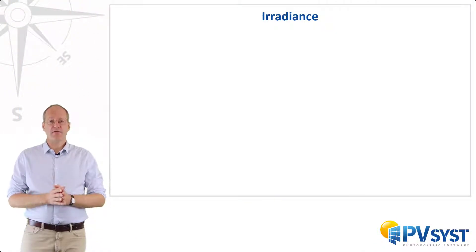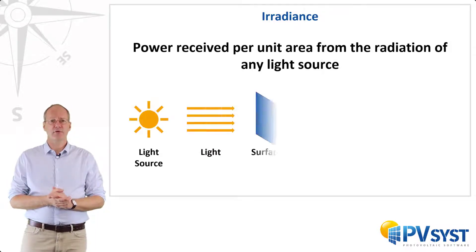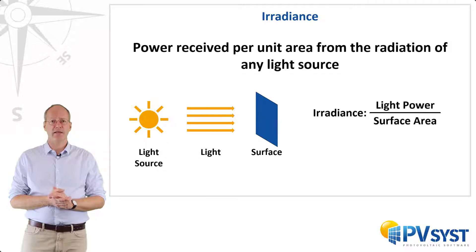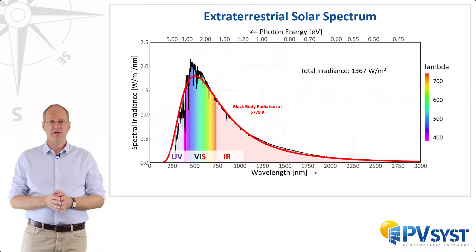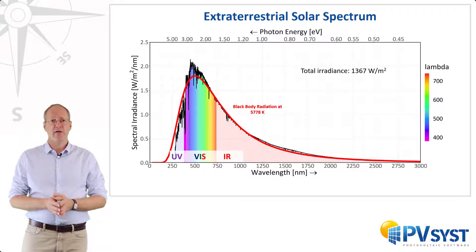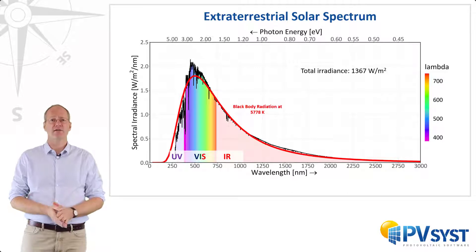We have used the term irradiance already — let's now give a formal definition. Irradiance is the power received per unit area from any light source, typically given in units of watts per square meter. Here again is a plot of the extraterrestrial solar spectrum, which is a spectrum just outside the Earth's atmosphere, and its total irradiance amounts to 1367 watts per square meter.